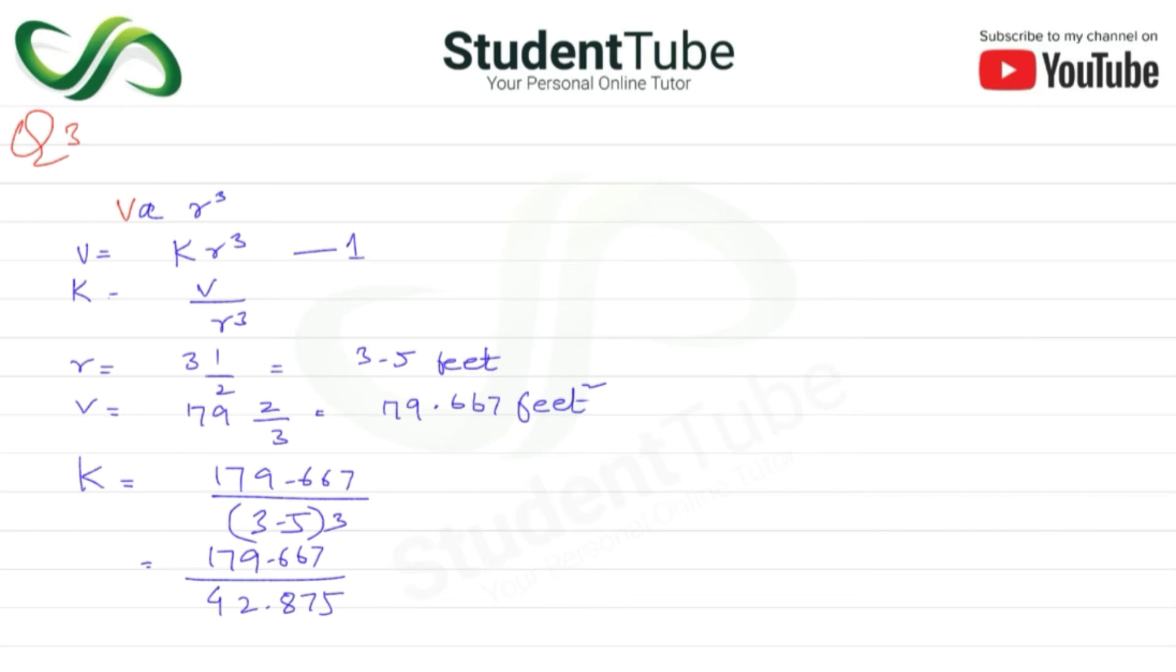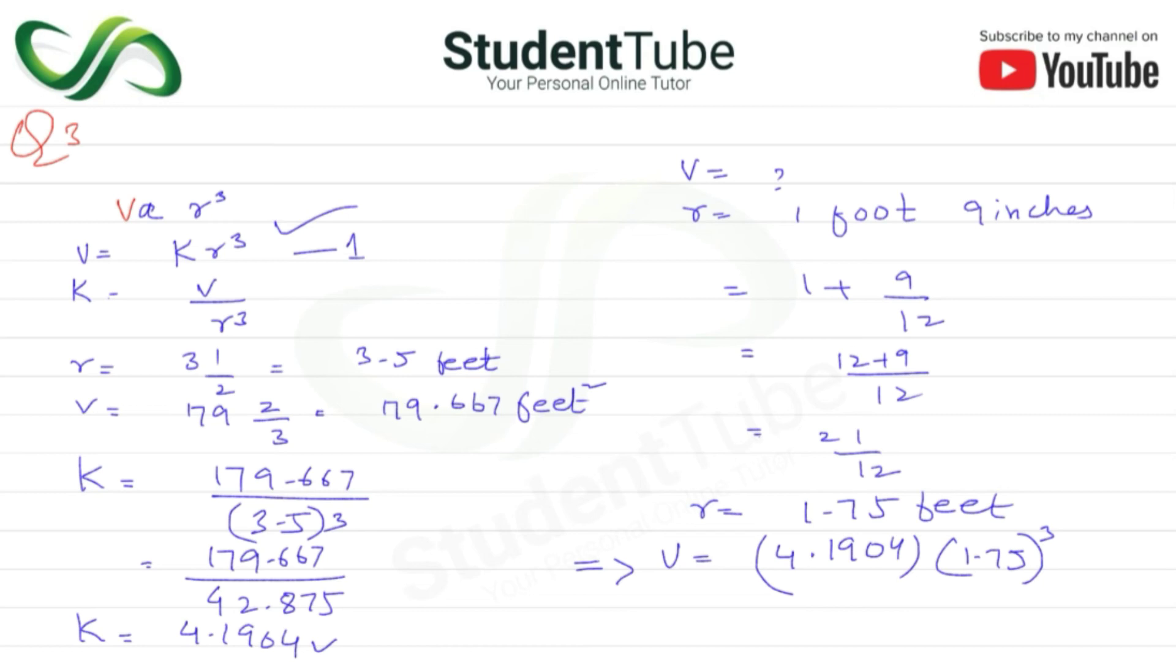Now we have to find when r is 1 foot 9 inches. So 1 plus 9 upon 12, which gives us 12 plus 9 equals 21 upon 12. So r is equal to 1.75 feet. Now we have V is equal to K times r cube, so 4.1904 times 1.75 cube. V is equal to 2.457 cubic feet, answer.